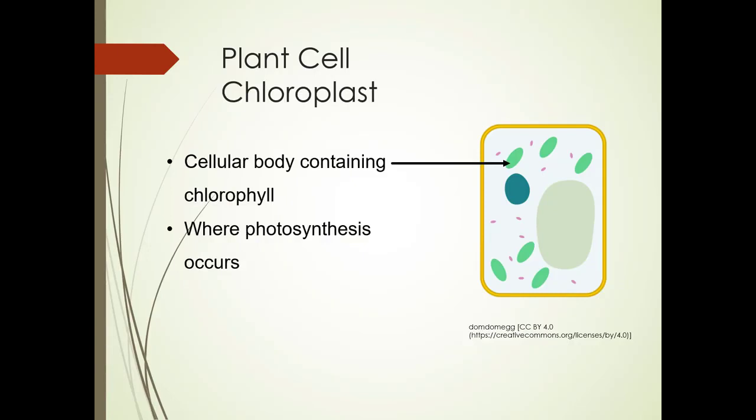A chloroplast is the cellular body containing chlorophyll, and this is where photosynthesis occurs. We're going to get much more into photosynthesis because it's really involved, and we're just going over the basics here.